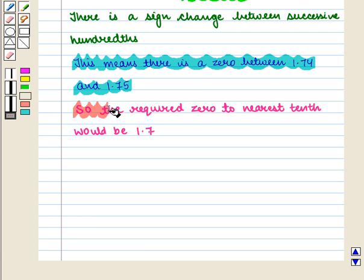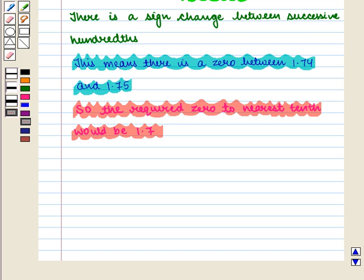So the required zero to nearest tenth would be 1.7. We have used the intermediate value theorem to find an approximation for this zero to the nearest tenth.